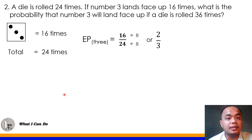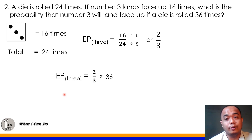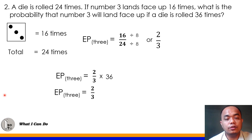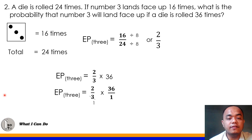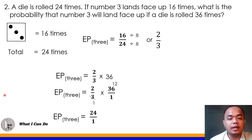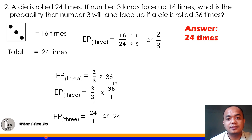We use 2/3 and multiply by 36 to predict how many times number 3 will appear when the die is rolled 36 times. Converting 36 to a fraction (36 over 1) and using cancellation: GCF of 3 and 36 is 3, so 36 divided by 3 is 12. Multiply: 2 times 12 is 24, over 1. So number 3 will appear 24 times when the die is rolled 36 times.